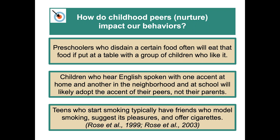How do childhood peers impact our behavior? Preschoolers who don't like a certain food will often eat it if placed at a table with children who do. Children who hear English spoken with one accent at home and another in the neighborhood will likely adopt their peers' accent, not their parents'. Teens who start smoking typically have friends who model smoking, suggest its pleasures, and often offer cigarettes — peers can have a really large influence on behavior.